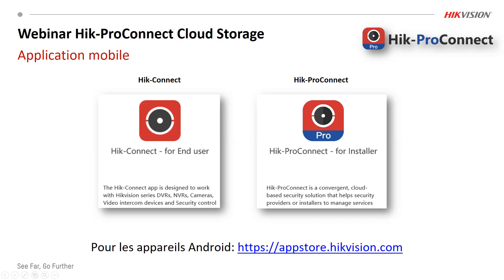Ce qui est très important pour les gens qui utilisent Android : utilisez le lien en bas pour trouver les deux applications sur votre téléphone Android. Très important — on trouvera toujours la dernière version pour installer chez un client. Du moment où l'app est installée, elle va automatiquement faire un update quand il y a des updates. Mais pour la première fois, c'est très important d'utiliser ce lien pour télécharger les APK sur le téléphone Android.